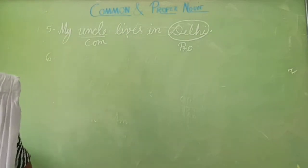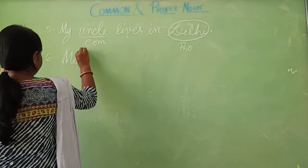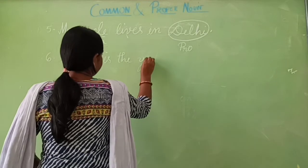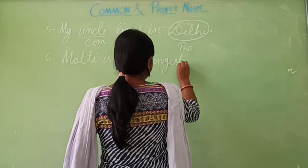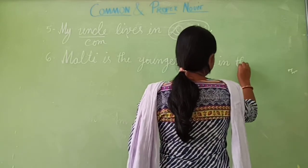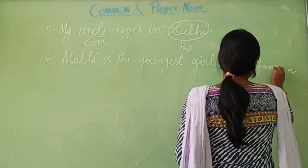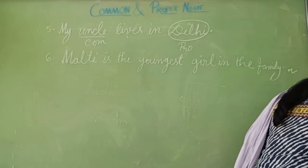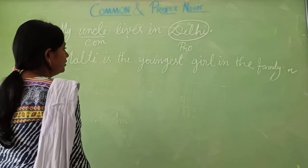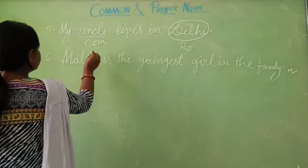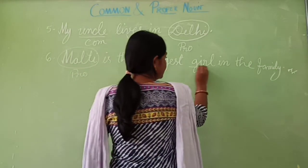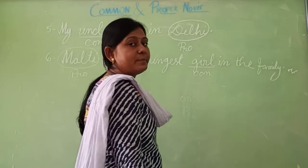Next sentence, number 6: Malti is the youngest girl in the family. Malti is the special name of a person, so Malti is a proper noun. Girl and family are common nouns.